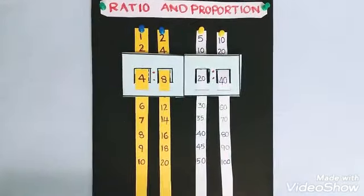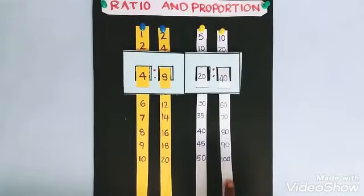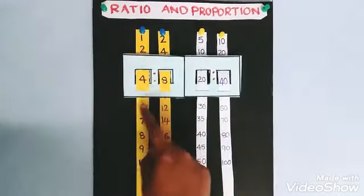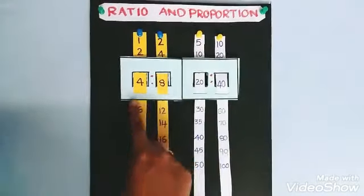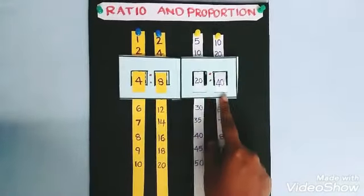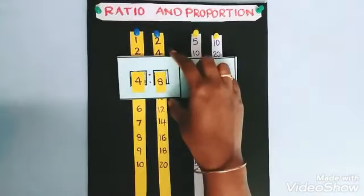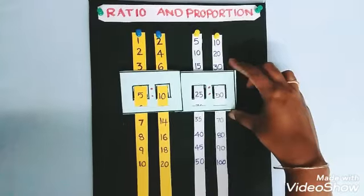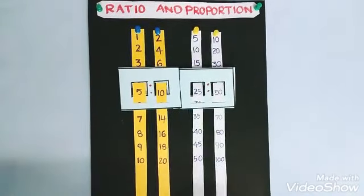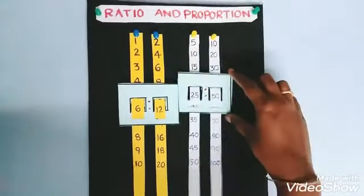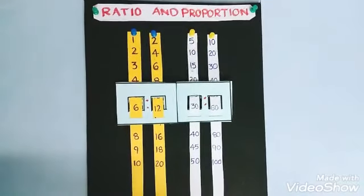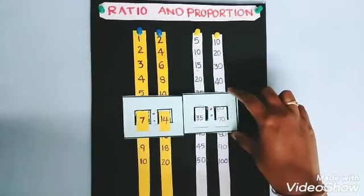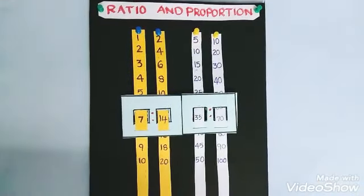Now we will compare 1 and 2 tables with 5 and 10 tables respectively. Here is the 1 and 2 tables, and here is the 5 and 10 tables. 4 is to 8 equals 20 is to 40. Next, 5 is to 10 equals 25 is to 50. 6 is to 12 equals 30 is to 60. 7 is to 14 equals 35 is to 70.